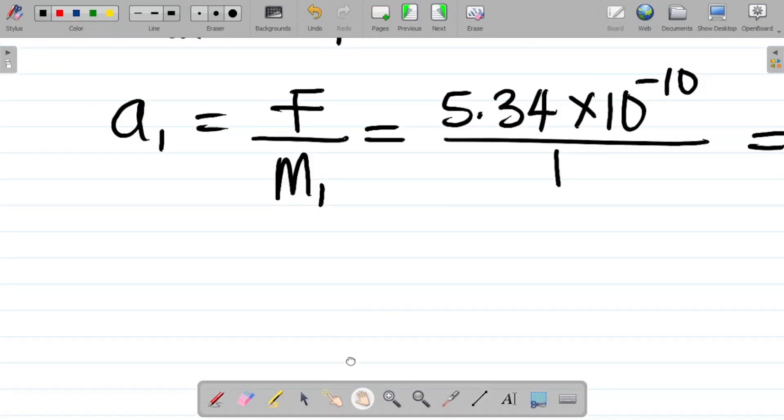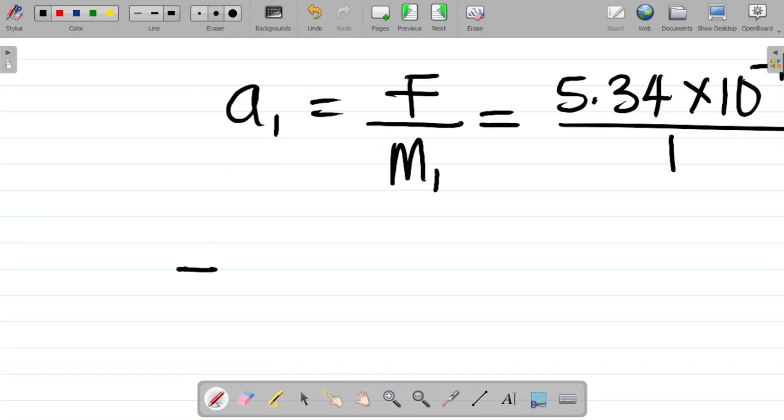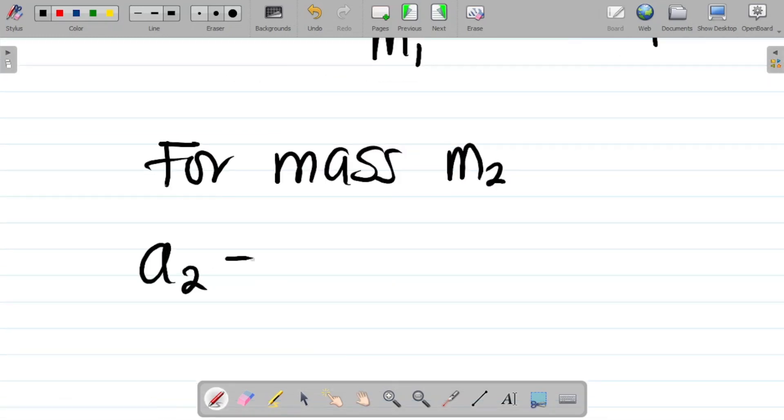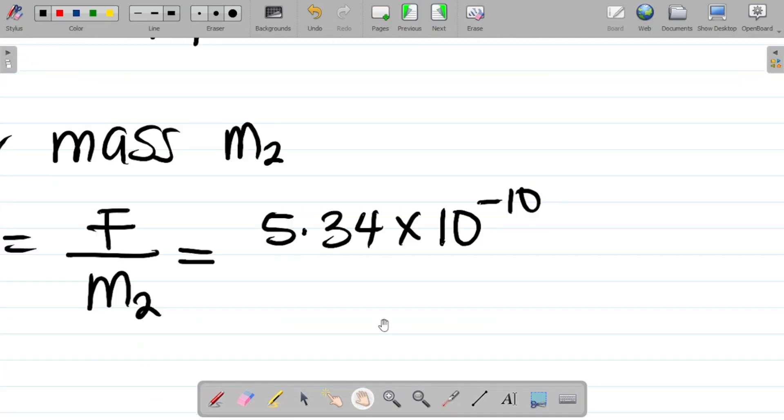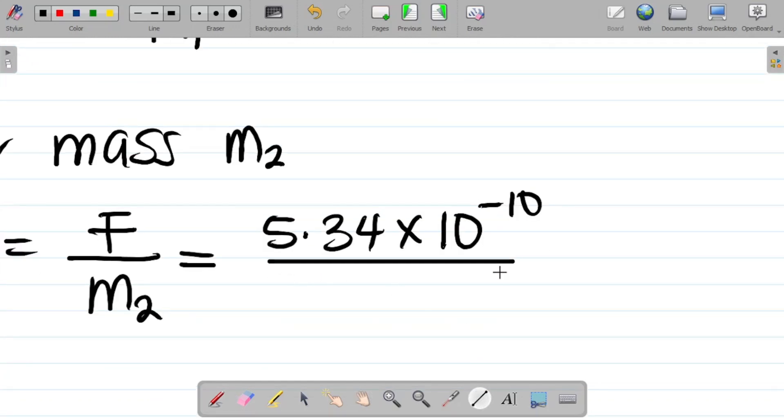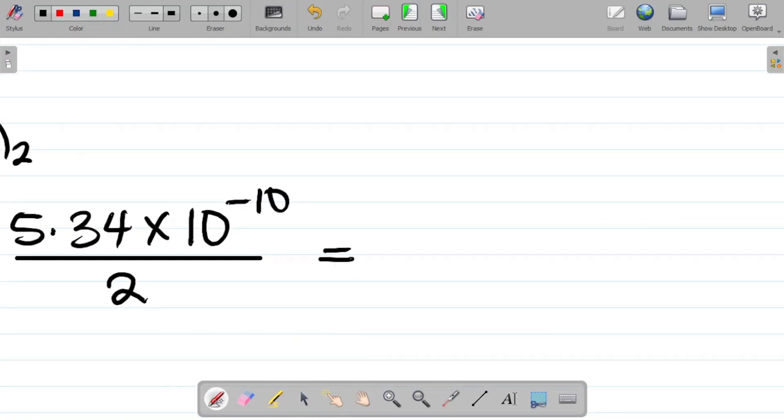Let's do the same thing for A2 or for mass M2. For mass M2, we have that A2 is equal to F all over M2. So this would be equal to F, we said is 5.34 times 10 to the power minus 10, all divided by the value of M2, which is 2. The second mass was 2 kilogram. Divide this by 2.